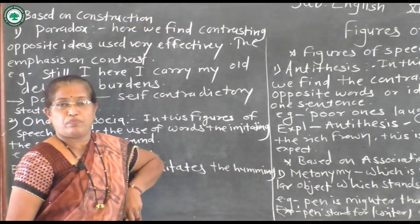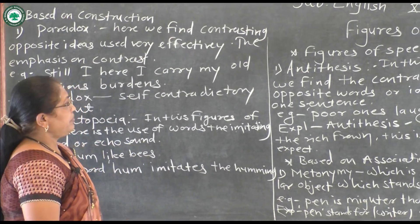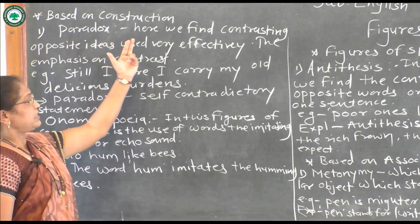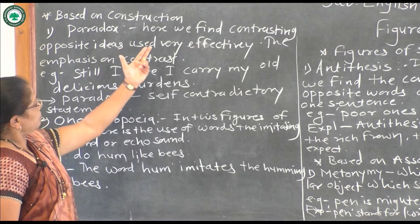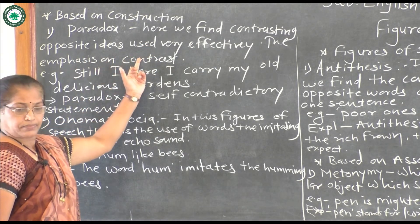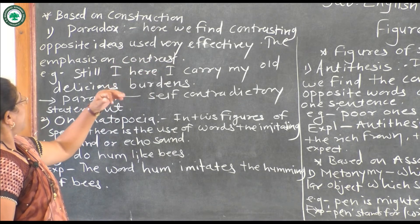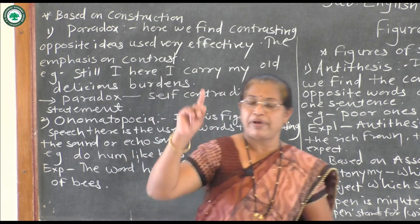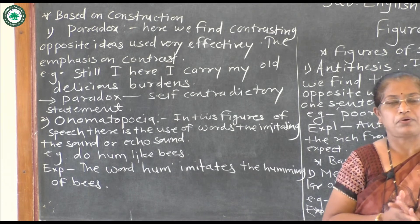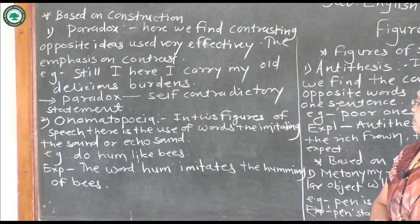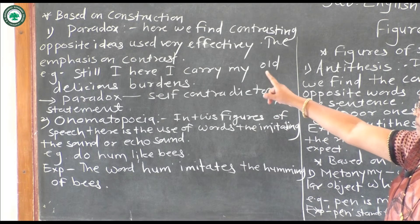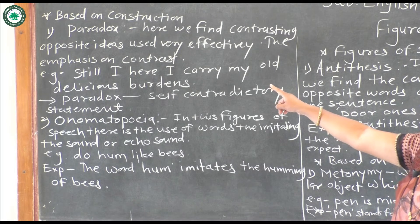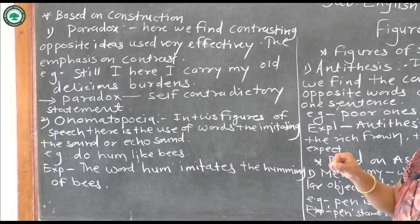The fourth classification is figures of speech based on construction. The first is paradox. In paradox, we also find contrasting opposite ideas. In our first poem 'Song of the Open Road' there is an example. In this figure of speech, the poet uses contrasting opposite ideas very effectively, and the poet emphasizes on contrast.